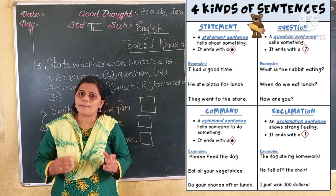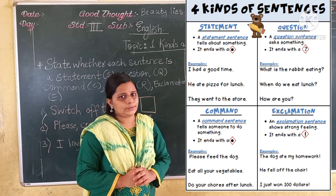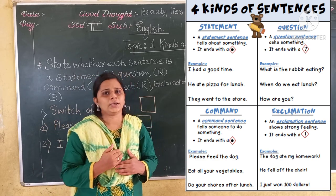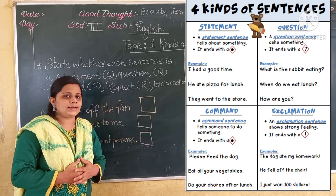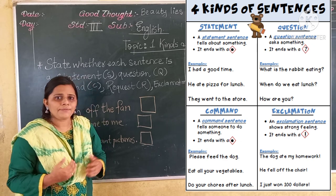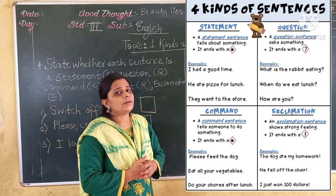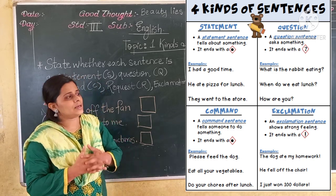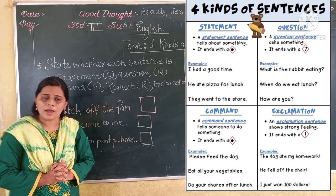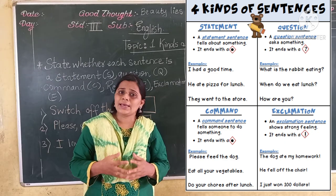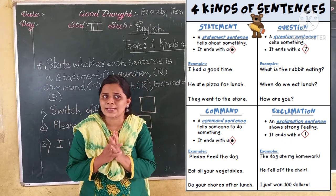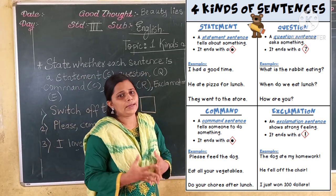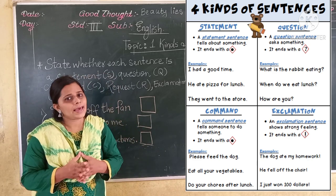And then we discuss the command. A sentence which gives you an order, which shows order — that sentence is known as a command. And then we discuss the request. A sentence that shows a request — that sentence is known as a request. And then the exclamation. A sentence which shows a strong sudden feeling of mind — that sentence is known as an exclamation.